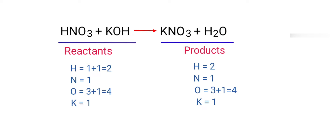There are two hydrogen atoms, one nitrogen atom, four oxygen atoms and one potassium atom on both sides. So we don't need to balance this equation because this equation is already balanced.